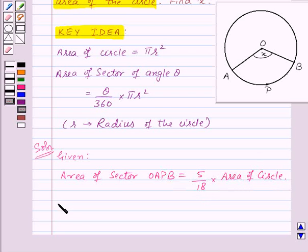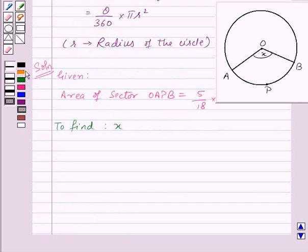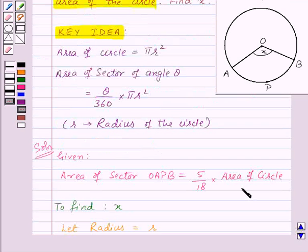And we need to find the value of X. So first of all, let us assume that radius of the given circle will be R. Let us denote it as equation 1.